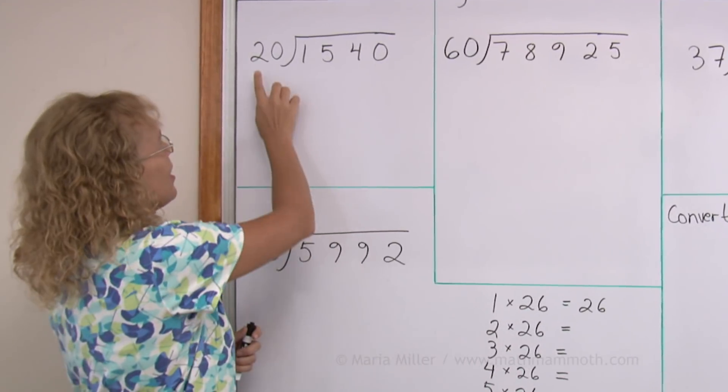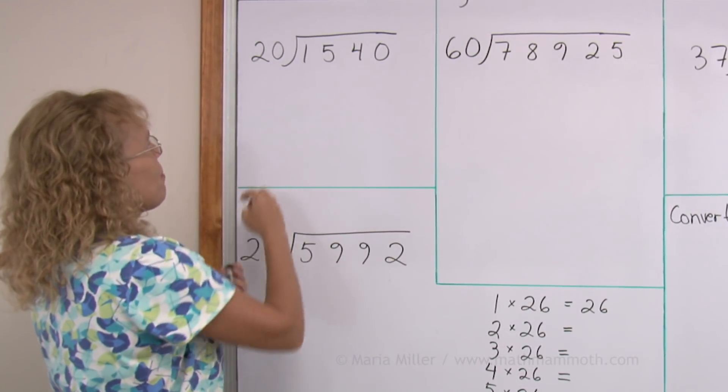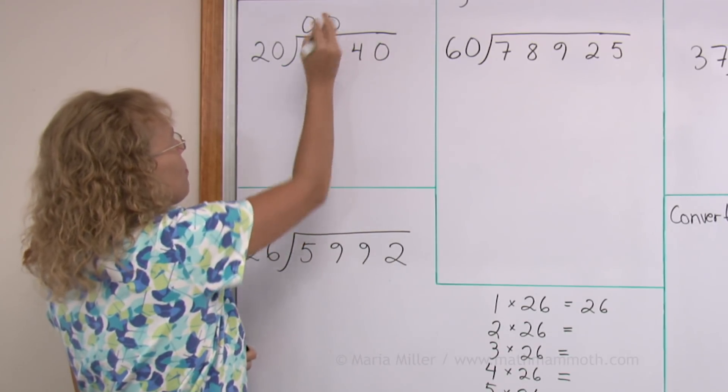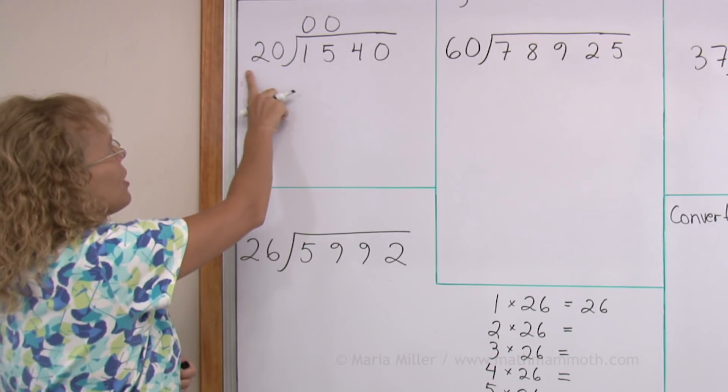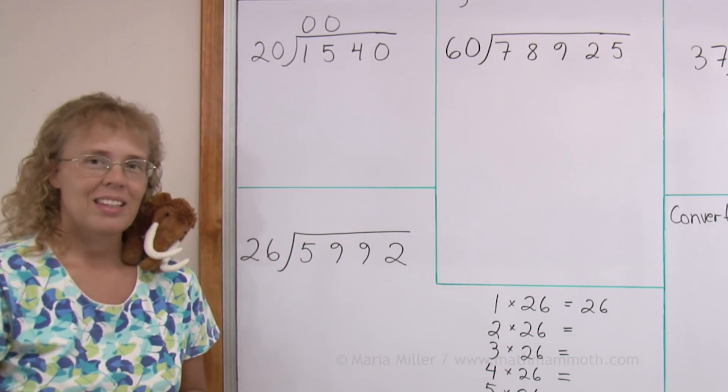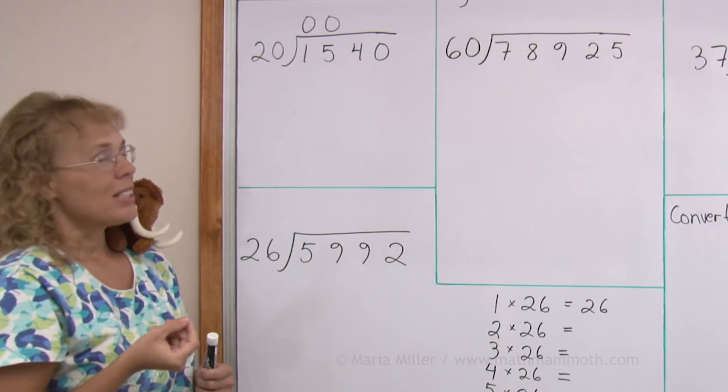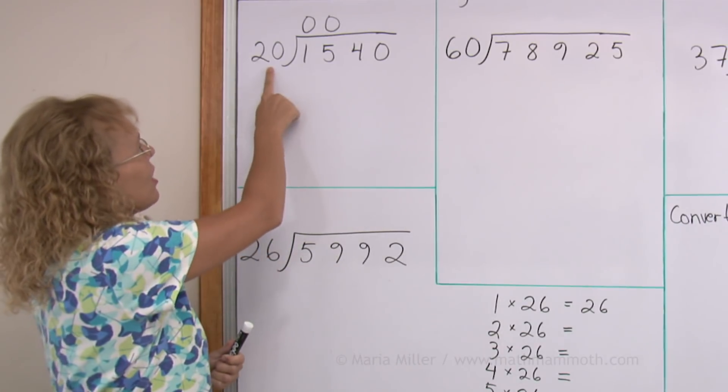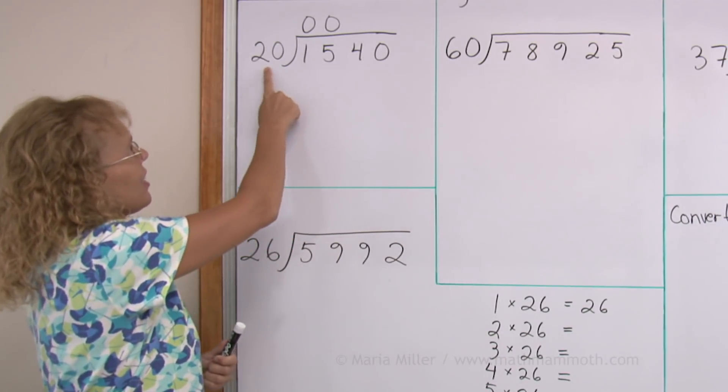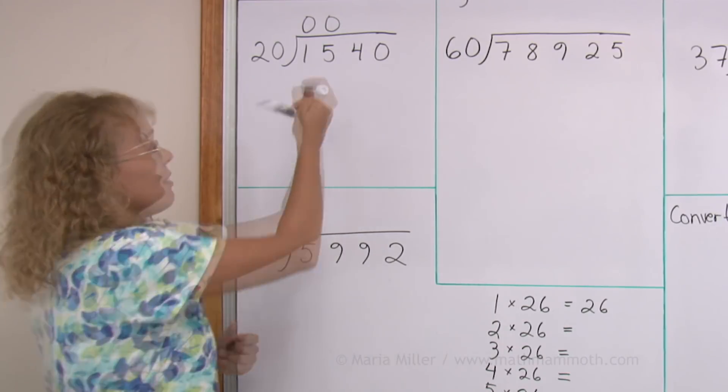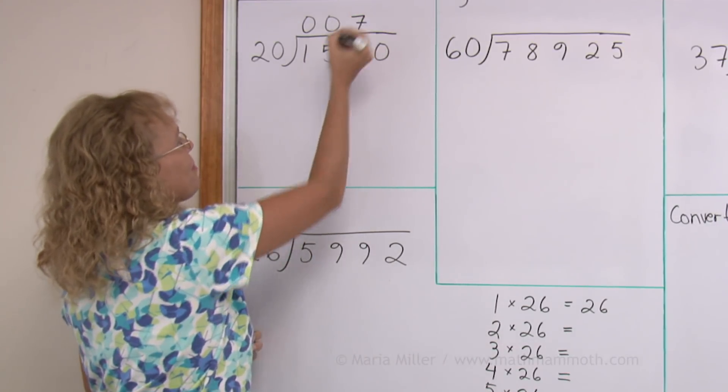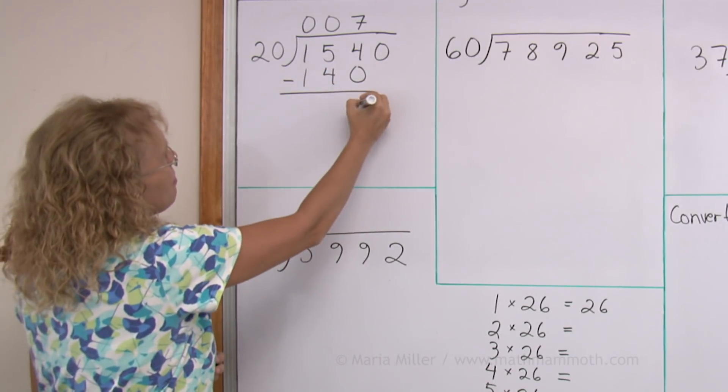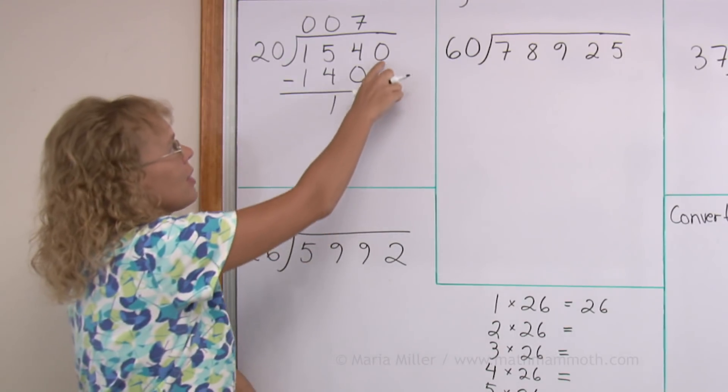You think exactly the same way. Does 20 go into 1? No. Does 20 go into 15? No. And then, how many times does 20 go into 154? Basically just multiply. 6 times 20 would be 120. 7 times 20 would be 140. 8 times 20 would be 160. So, 7 times. 7 times 20, 140. And subtract. And then drop down this digit.